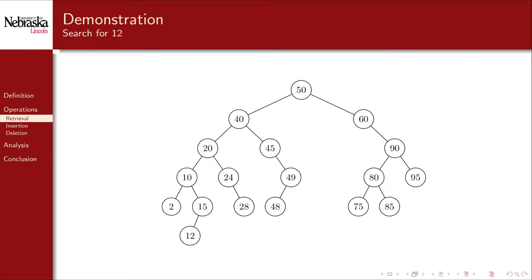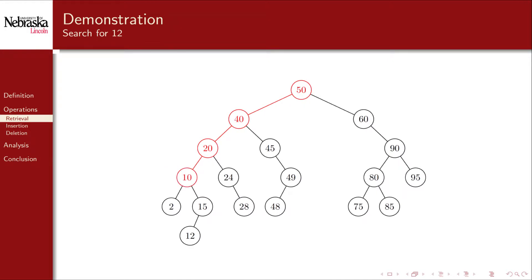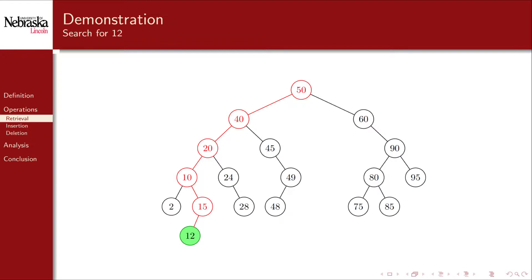Here's another example. Suppose we wish to search for 12. The same process takes us to 20, but instead of going right at that point, we go left as 12 is less than 20. Comparing to 10, we traverse to the right. 12 is less than 15, so we traverse left, and we end in a successful search having made six key comparisons.